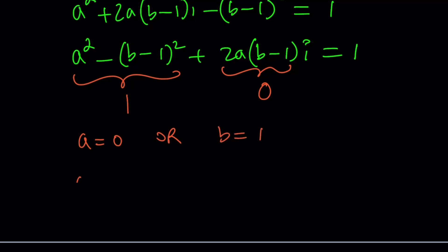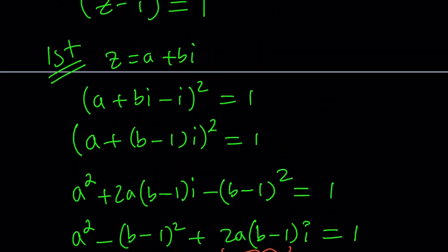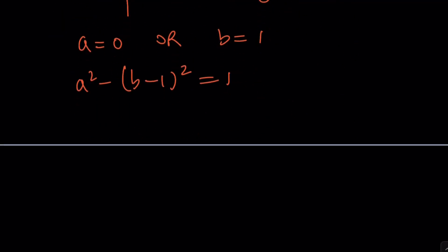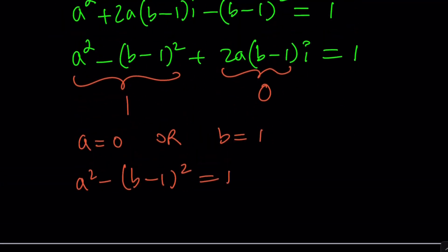This implies a = 0 or b = 1. Now going to the first equation, a² - (b-1)² = 1. And if a equals zero, and by the way, we forgot to mention, since z = a + bi is our number, a and b have to be real numbers. Therefore, we are not accepting a = 0 because if you replace a with zero, you get (b-1)² = -1. But that's not true for real numbers.